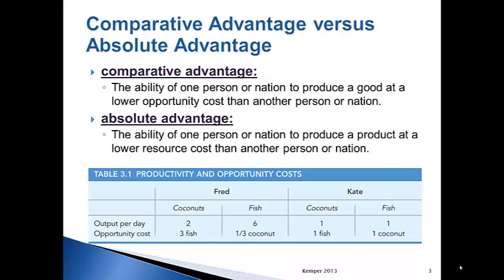But Fred can't do both — he needs to specialize. If we only look at absolute advantage, we would say that Kate can get one or the other, so we don't know what particular task they should specialize in. When we look at opportunity cost, though, we are able to see how they should specialize and what they should trade for. If Fred were to collect coconuts, he would have an opportunity cost of three fish. Meanwhile, Kate, when she collects coconuts, has an opportunity cost of one fish. Three is greater than one, therefore whichever has the lower opportunity cost has a comparative advantage — that is Kate — and she should specialize in coconuts.